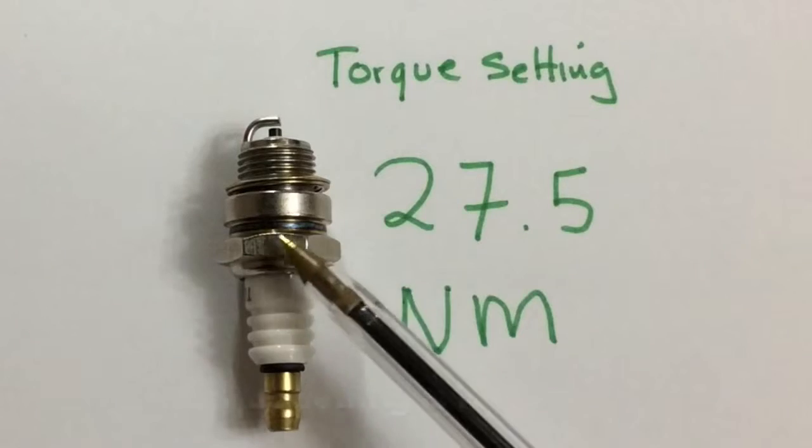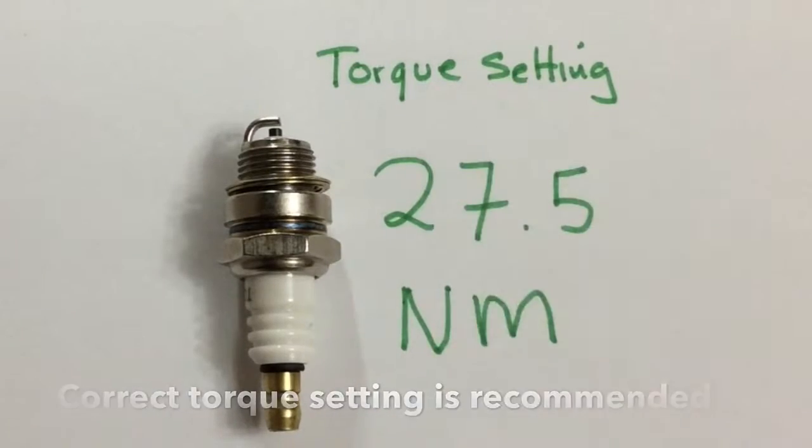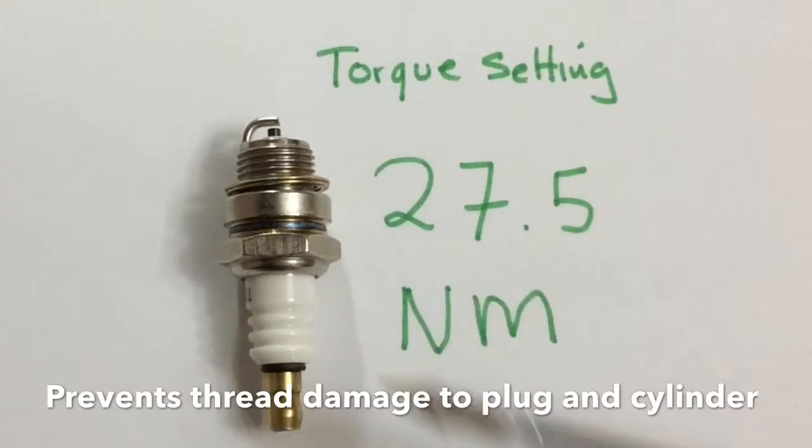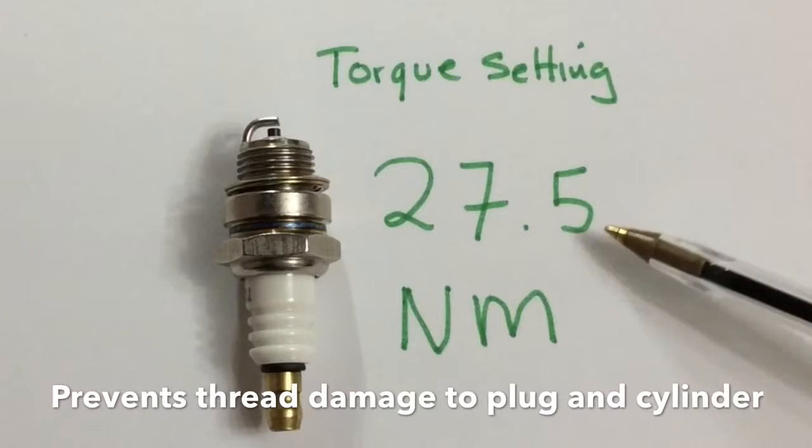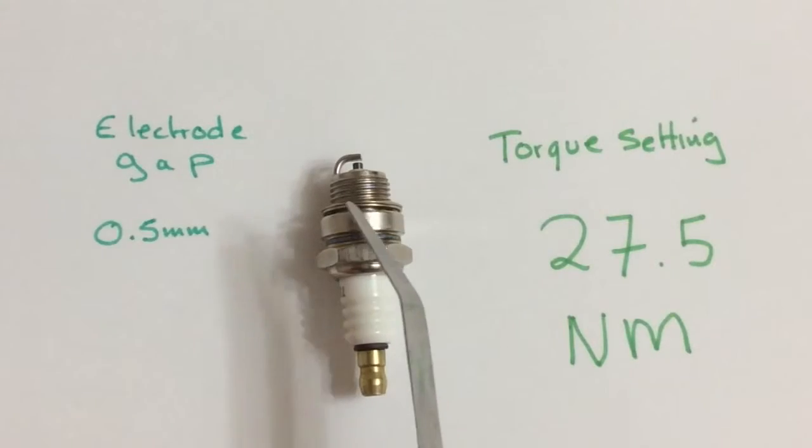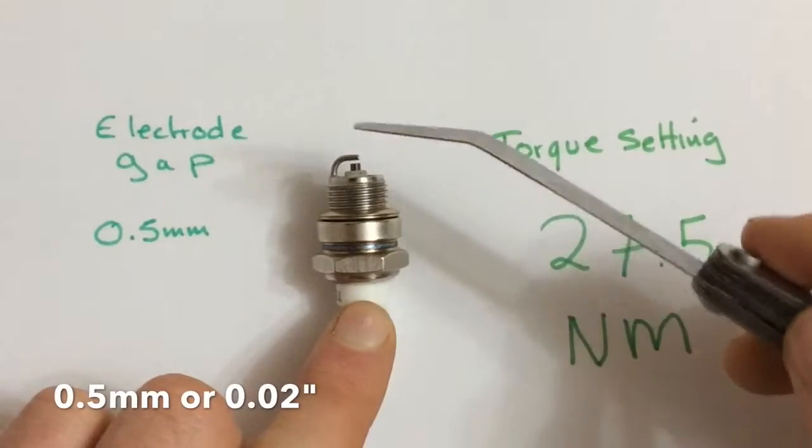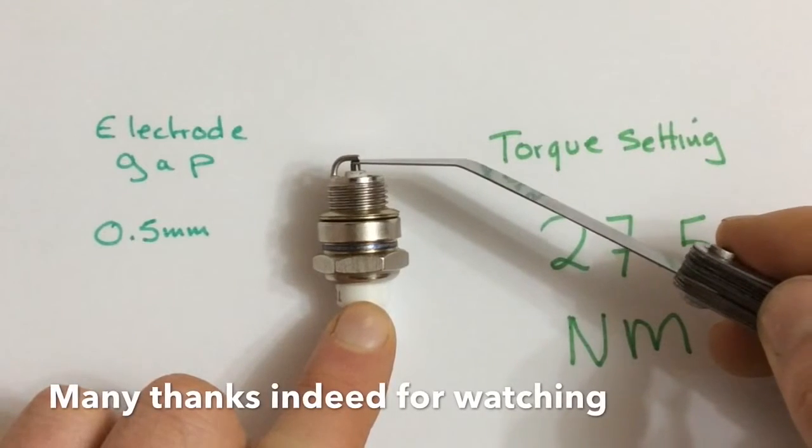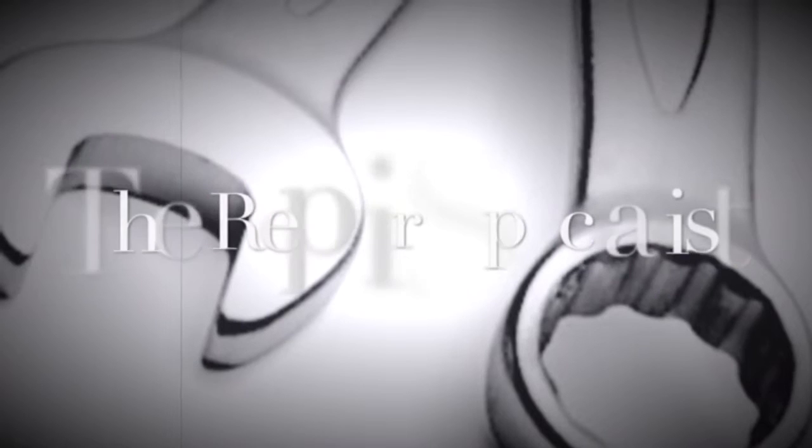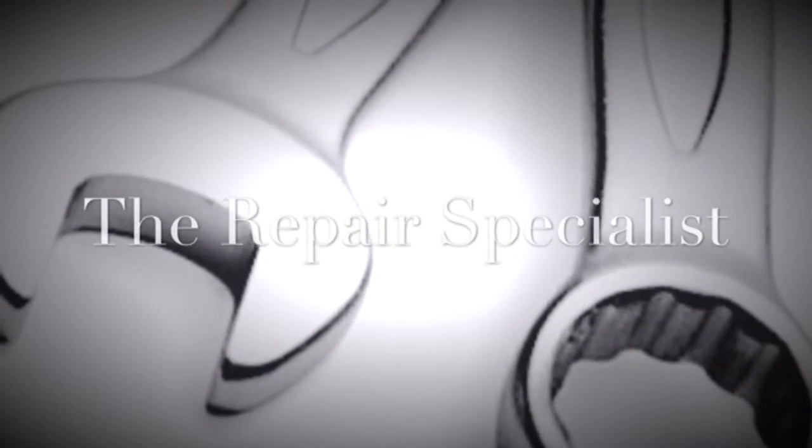Now the torque setting for these spark plugs, ideally, is 27.5Nm. I have in the past seen threads stripped, and I've seen these plugs not going tight enough. But if we stick to this, this is in fact what Still does recommend. 27.5Nm. The electrode gap should be 0.5mm. So it's just important we get a good set of feely gauges, and regularly check between the electrode and the ground electrode. That one's actually okay. 27.5Nm.